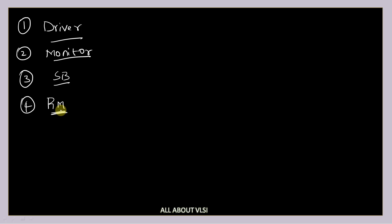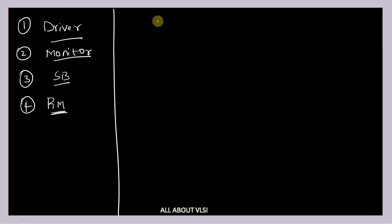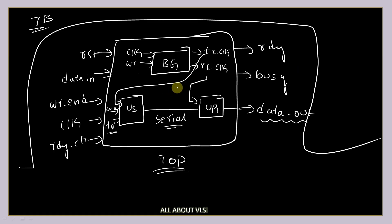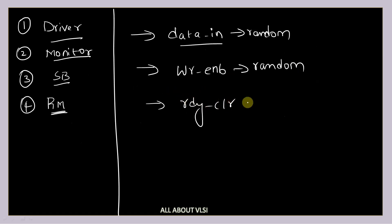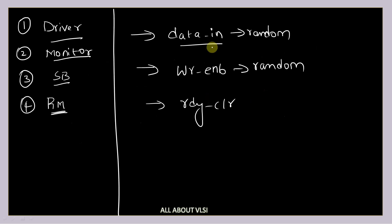In our SV testbench, whatever data we want to send to our top module, we are not going to send it pin by pin. First we are going to randomize the data. The data we want to send to our design is data_in, which is randomized, and write enable, which is also random data sent by the testbench. Ready_clear is controlled by our driver and is not random.